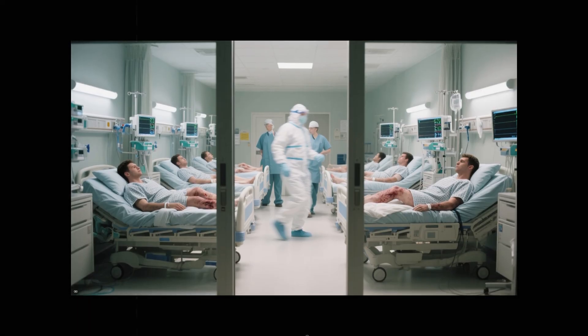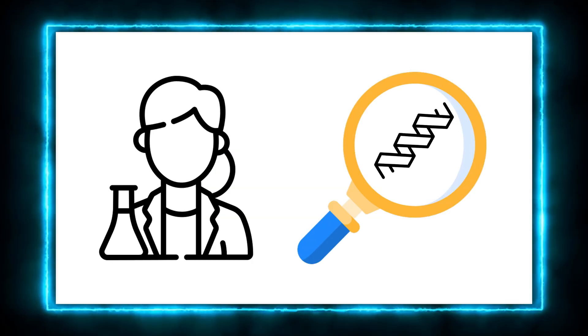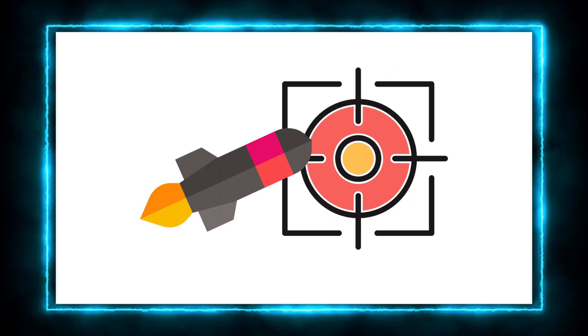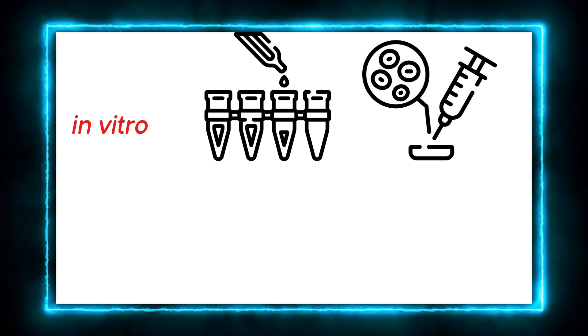To understand what went wrong, we need to look at how new drugs are developed. It starts in the lab, where scientists identify a molecule that might affect a specific target in the body. First, it's tested in a test tube and on cells, then in animals.